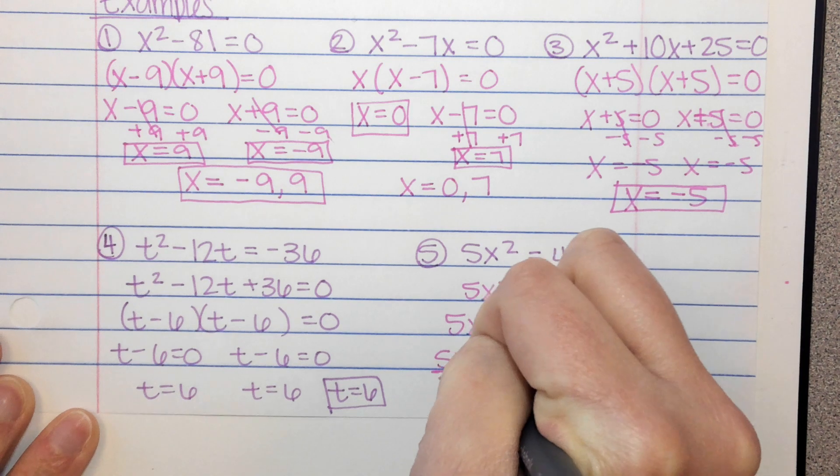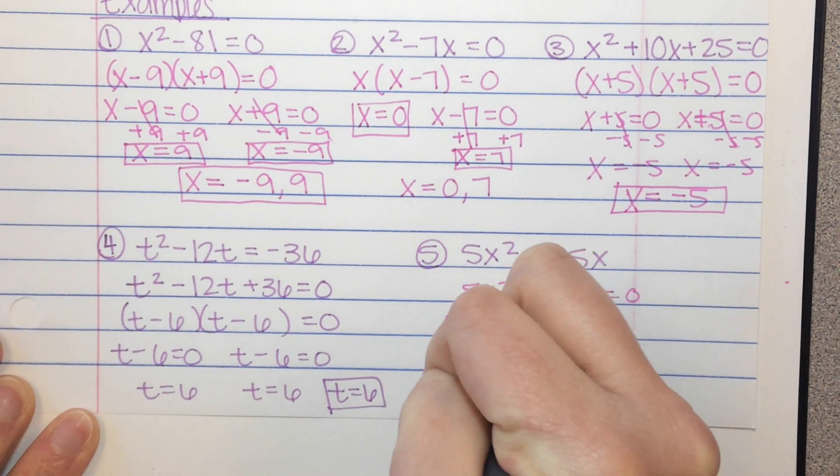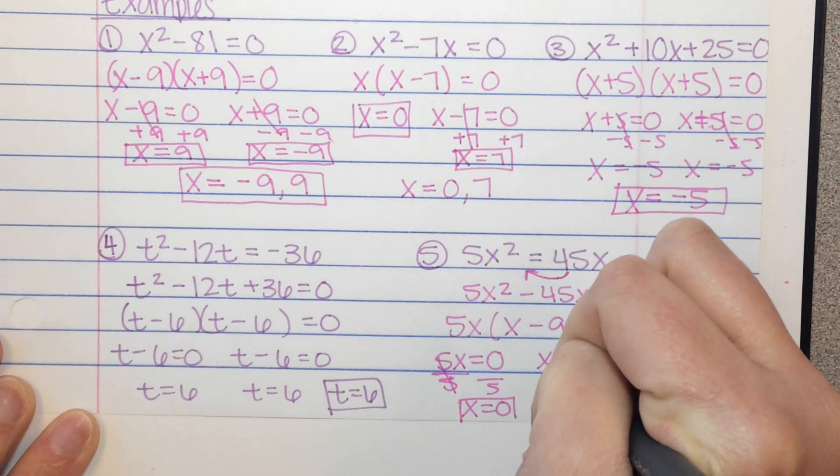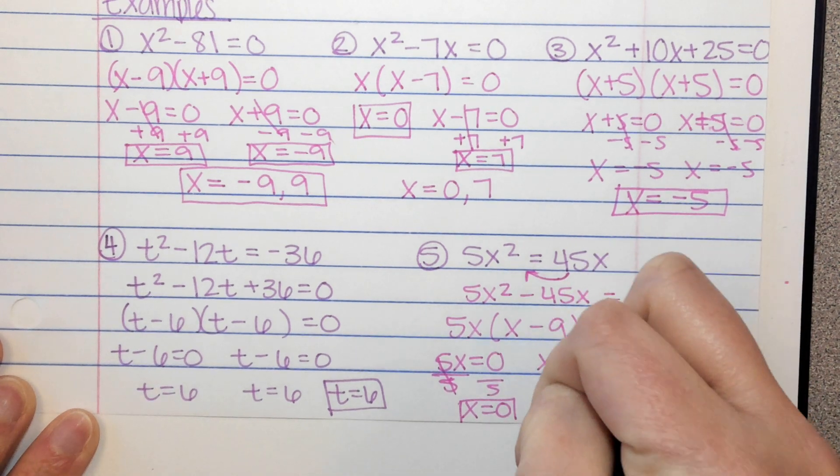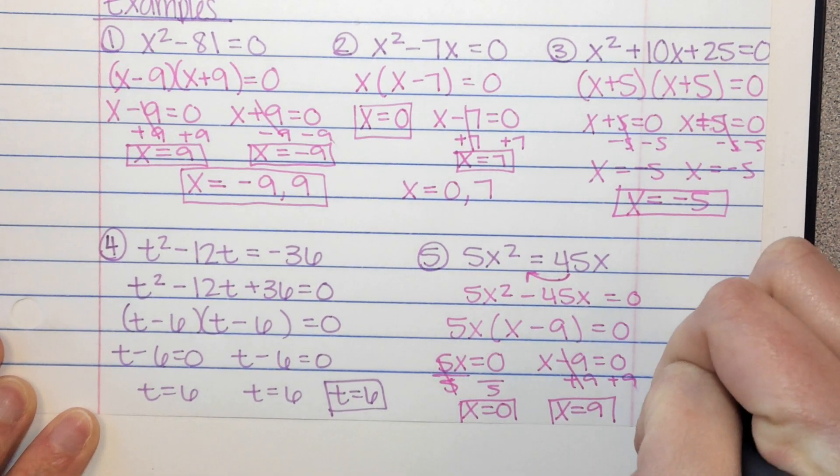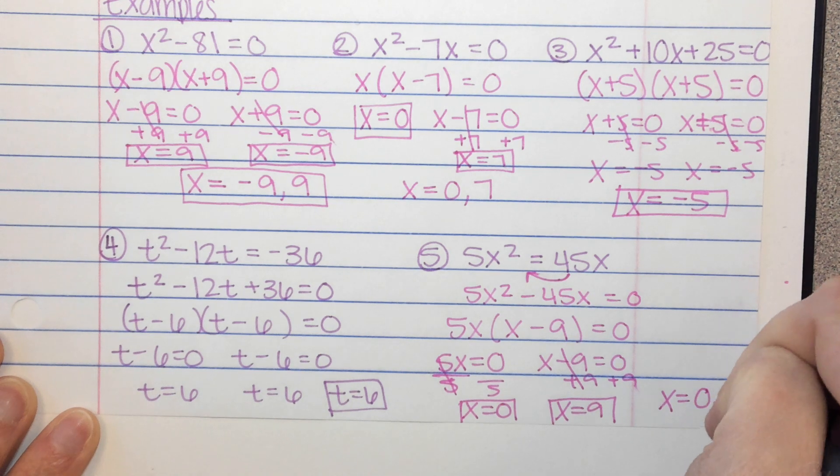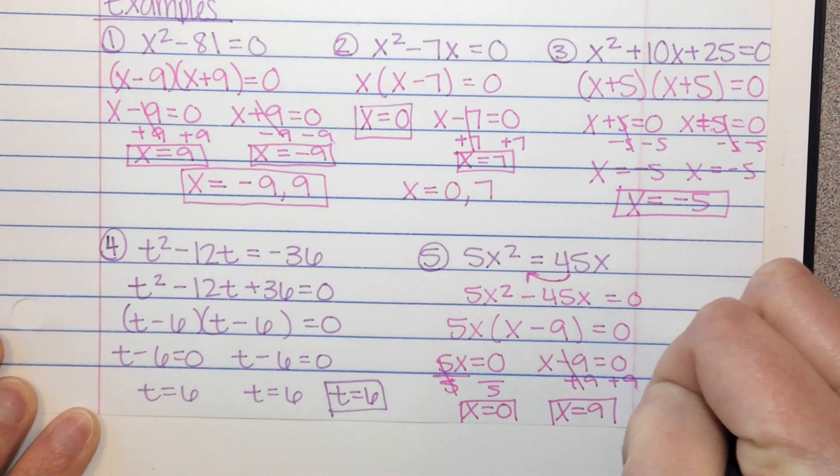Divide both sides by 5. We get x equals 0. Add 9 to both sides, and we get x equals 9. And again, in Math Excel, I want you to put both numbers separated with a comma.